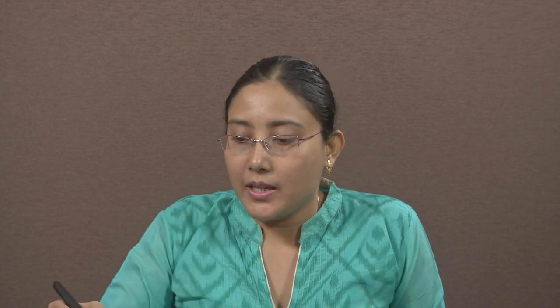To understand EMI filters, we have to first get familiarized with common mode chokes. These are pictures of common mode chokes. This is actually an inductor, so you may be wondering what is the difference between an inductor and what is being called a common mode choke. As you see here, there is a toroidal core and on it there are two coils.